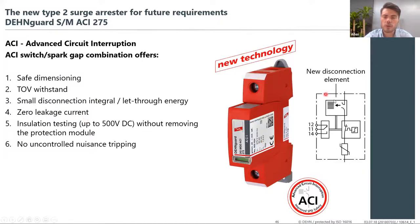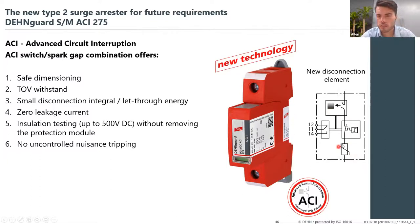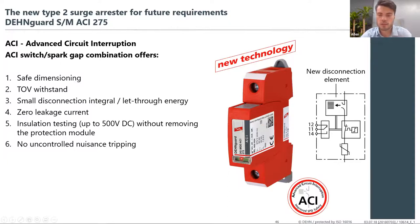Another feature is zero leakage current. MOVs normally degrade over time and start leaking current, causing nuisance tripping. The disconnecting element at the top of the ACI device is open in normal operation, so the MOV is not subjected to any voltage stress over its lifetime — hence zero leakage current. Also, when doing installation testing, you don't need to remove the modules — testing can be performed with modules in place, making maintenance much easier.